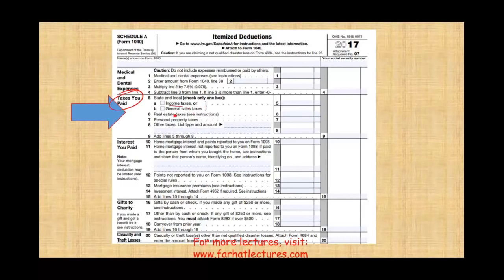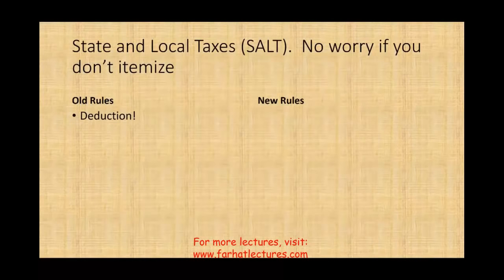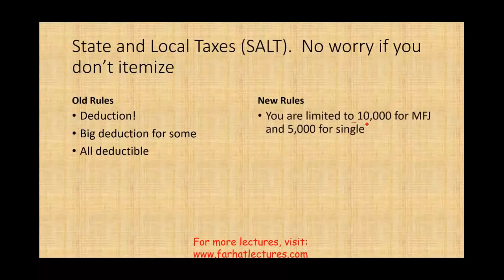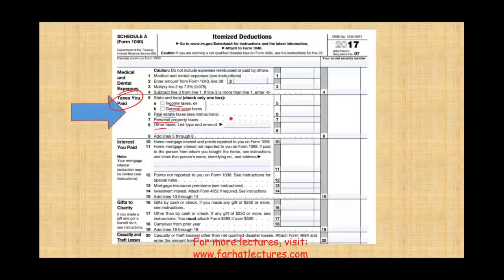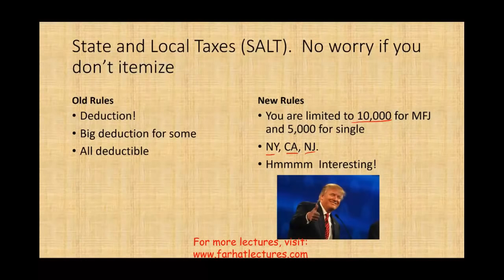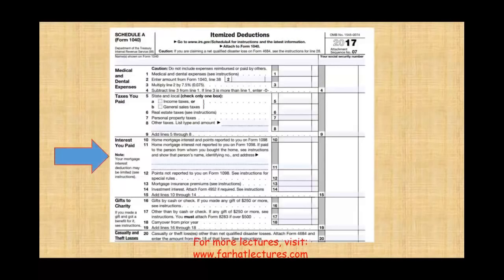The next topic is taxes you paid — income taxes, general sales tax, real estate, personal property tax, and other taxes. Under the old rules all of these were deductible on Schedule A if you itemized. Under the new rules you are limited to $10,000 for married filing jointly and $5,000 if filing single. This will most affect taxpayers in states like New York, California, and New Jersey where property taxes are high.